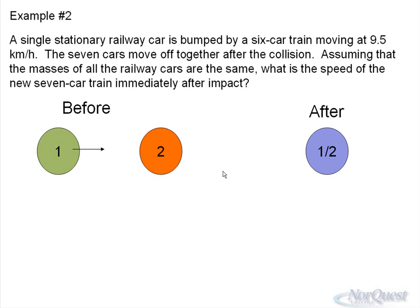we have a single stationary railway car is bumped by a six-car train moving at 9.5 kilometers an hour. The seven cars move off after the collision. Assuming all the masses are the same, what is the speed of the seven car after impact?